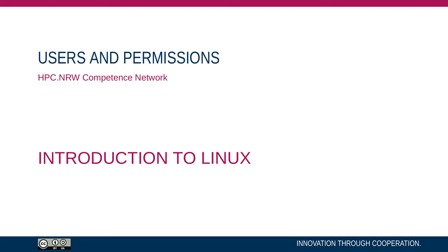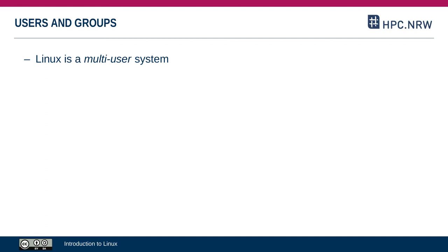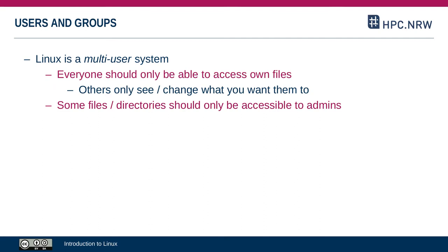In this video we'll be going over how Linux handles users and how Linux decides which user can do what based on permissions. Linux is designed as a multi-user system — it's intended to be used by multiple people, even at the same time. There are mechanisms that ensure everyone can only modify their own files, and other people can only see and change what the owner of the file wants them to.